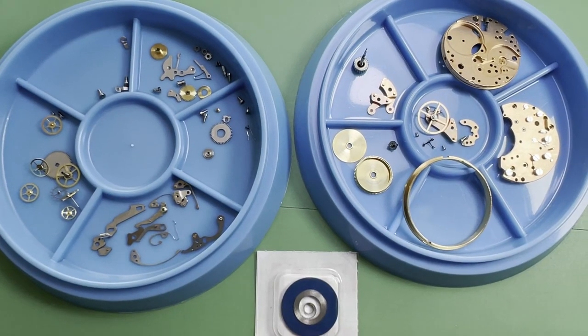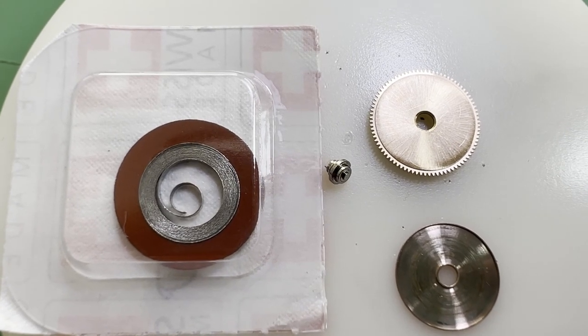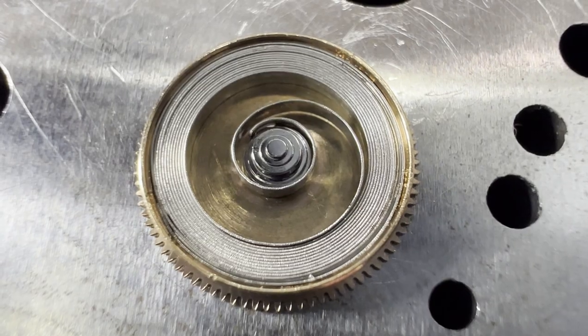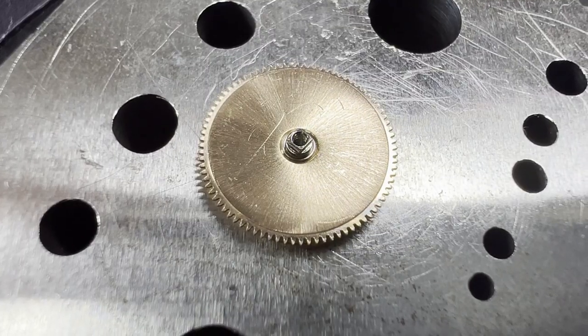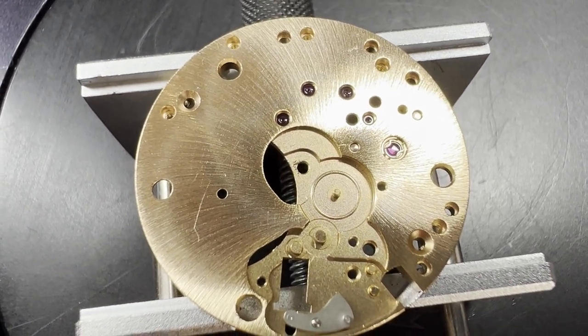To go with the cleaned movement, we have a new mainspring for the going barrel. We start the reassembly of the movement with the going barrel, putting in the new mainspring, oiling and replacing the barrel arbor and putting the lid back on. Next we go to the main plate to get the keyless and some of the motion works back in and oiled.